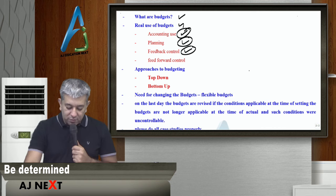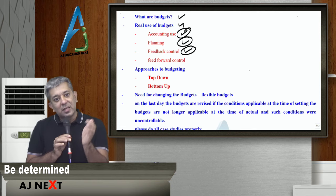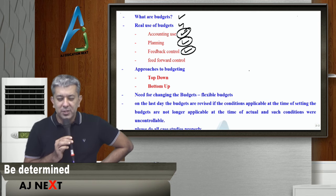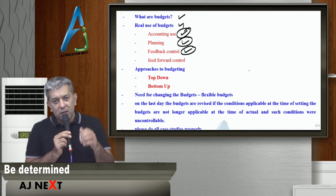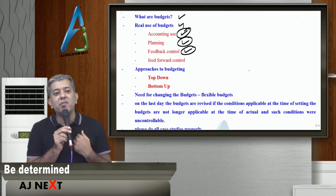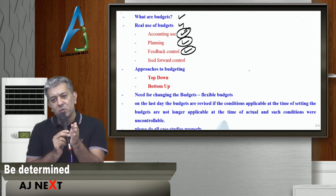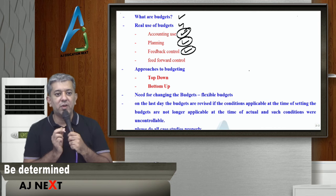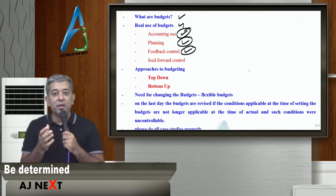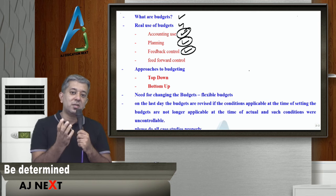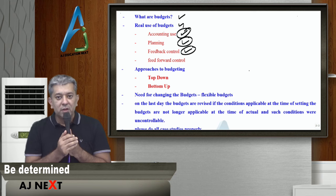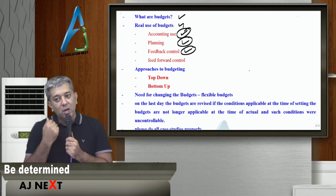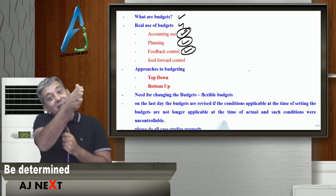Third is feedback control. Feedback control means at the end of the year, I try to find out what budgets I had made versus what actually happened. I would like to improve myself — what are my areas of weakness, what are my areas of strength? That becomes clear from this comparison. Whenever we calculate variances at the end of the year, that is called having a feedback control. Feedbacks are always done at the end.